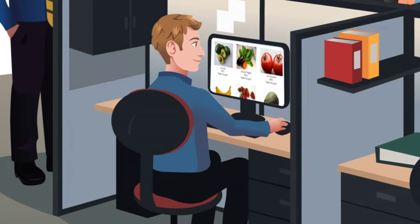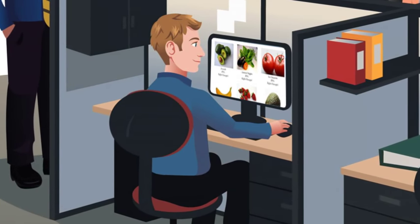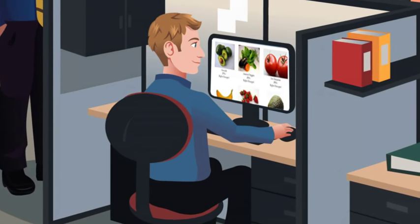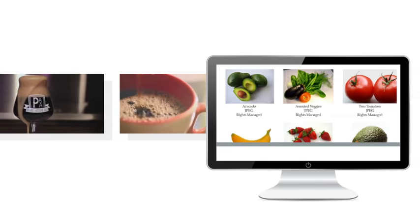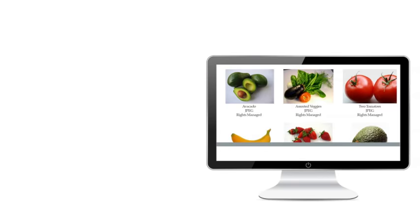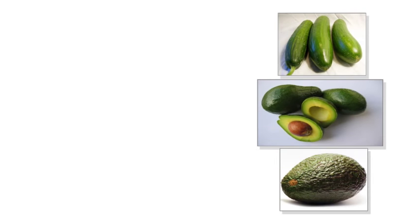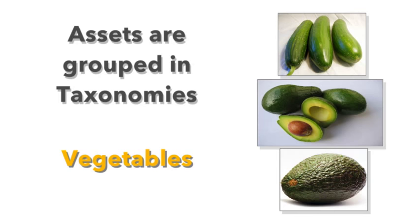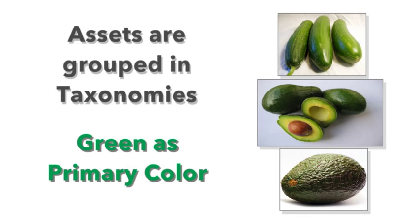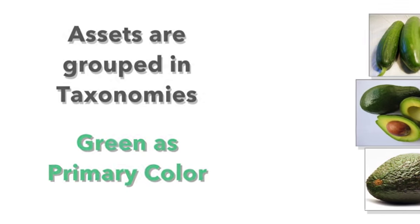A digital asset management system is a central place for what we need or what we want. Media files are brought into the system in a very predictable and efficient way. Each asset is typically grouped in categories or families called taxonomies. Digital asset managers or librarians ensure that all of the assets are placed in the correct taxonomy and in a collection so that the users can easily browse and find what they are looking for.